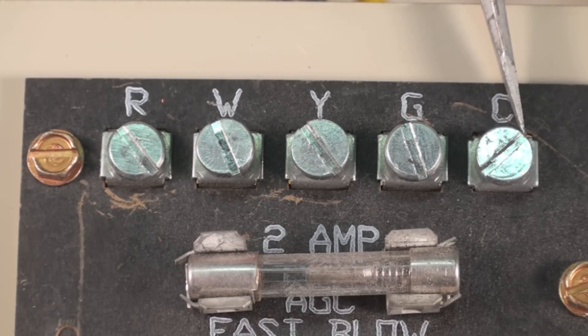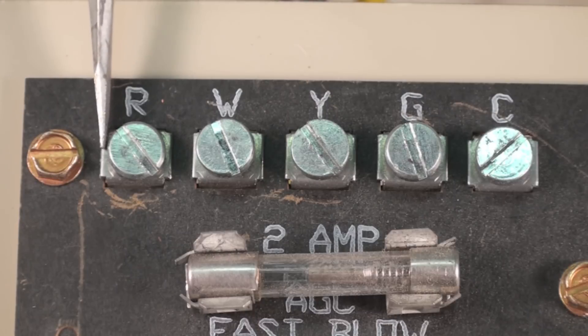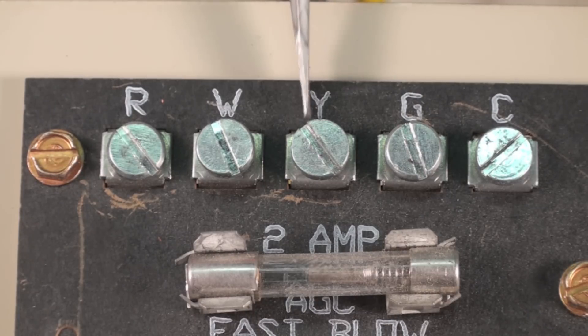Common usually not switched. R is power going to the thermostat. W heat, Y cool, G fan.